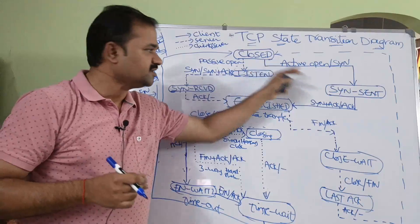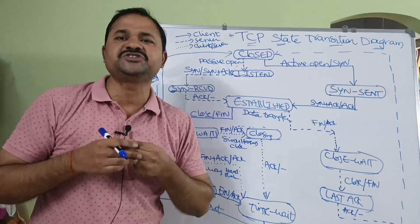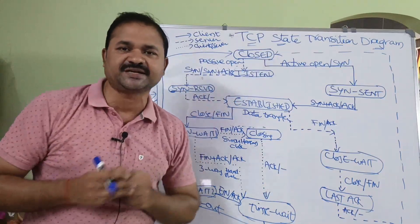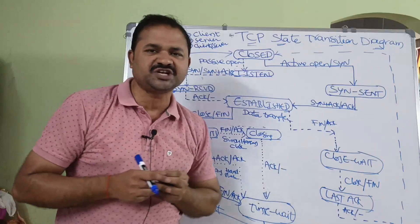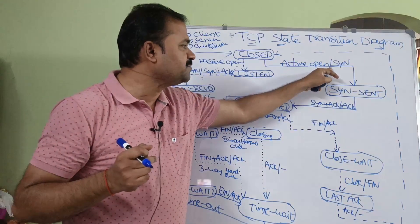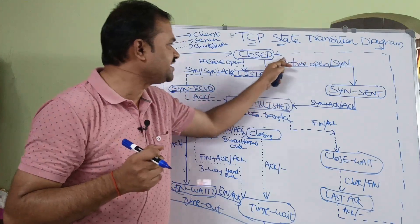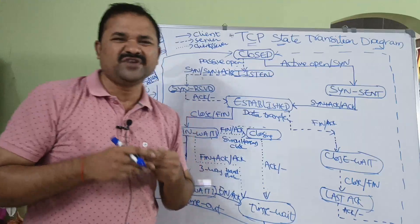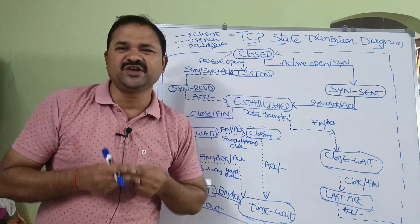Initially, both client and server will be in the closed state. States are represented using oval symbols. On top of every transition we have two strings: the first string is the input, followed by a slash, and then the output string.